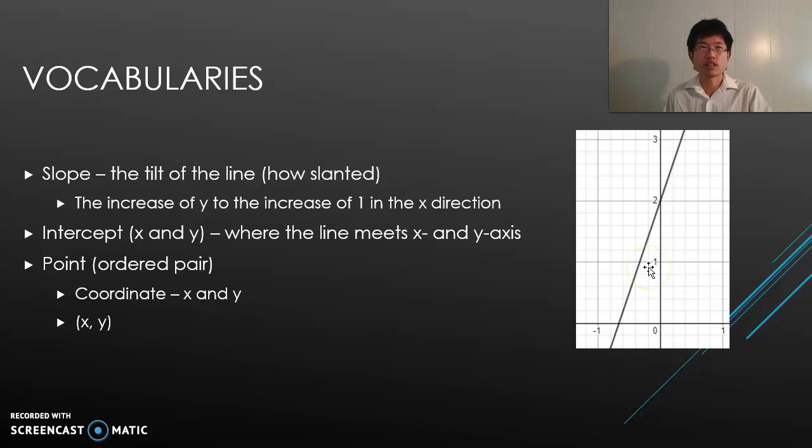It says increase, but it could be decrease. So every time it changes in the x-direction with a unit of 1, how much does it change in y? Sometimes the slope can be determined by change in y over change in x. Some teachers say it's rise over run, and that's pretty much it.